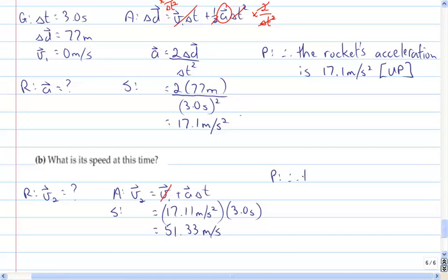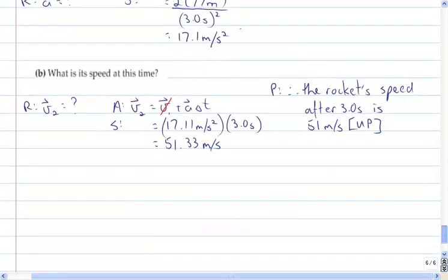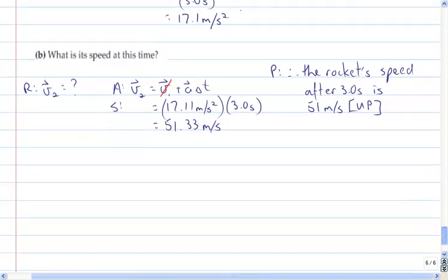Therefore, the rocket's speed after 3 seconds is 51 meters per second, and since that answer was positive and it makes sense, that's the homework done, or the practice questions. Now it's time for homework.